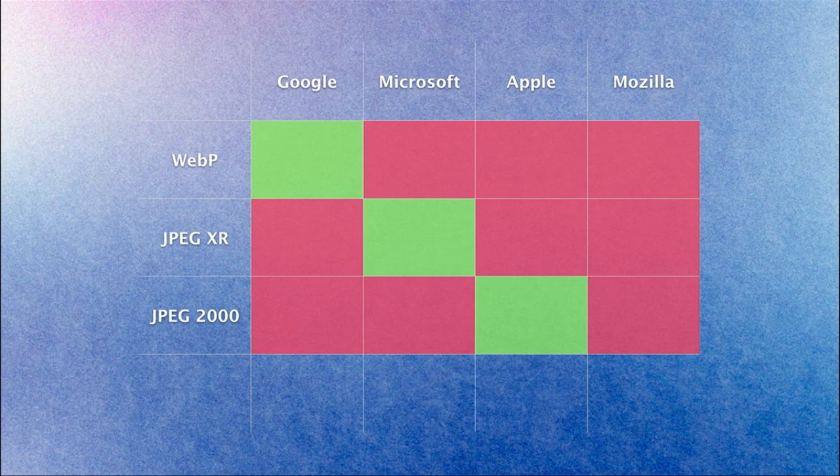Arguments against JPEG 2000 are the same as arguments against other new formats: anything younger than 20 years could be subject to submarine patents, and large corporations already harassed by patent trolls don't want to take extra risk. Newer formats are more computationally complex, so decoding could be slower. And it's a matter of opinion whether a 20–30% file size gain is worth the pain of adopting the new format in all browsers, image editing tools, image viewers, native apps, and everything else.